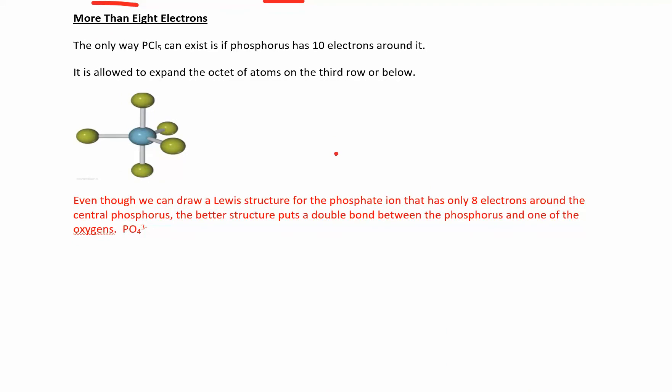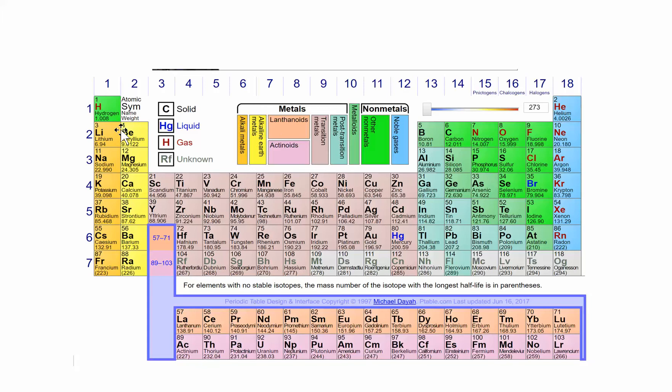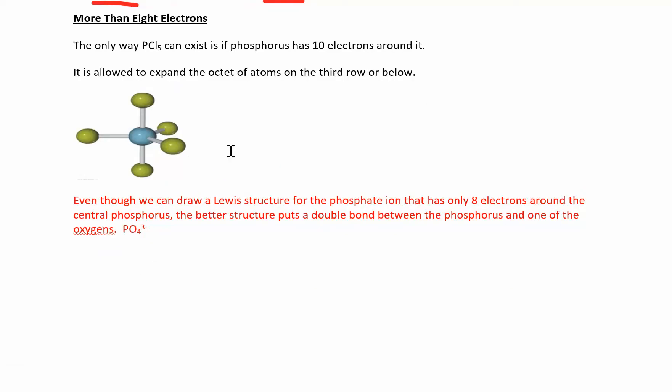Another exception to the octet rule is when you have more than eight electrons. So anything in row three and beyond can do that. So where's row three? This is one, two, this is three. So we'll see this a lot with phosphorus and sulfur. They expand their octet, they'll expand their octet, and they can take on more than eight electrons if they have to. They can do it, and you'll know when they have to. It'll be pretty, usually be pretty obvious.